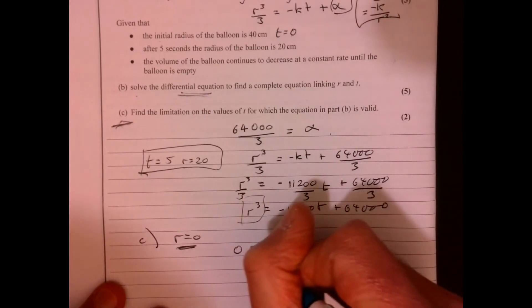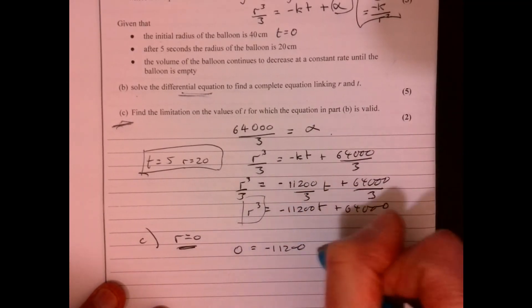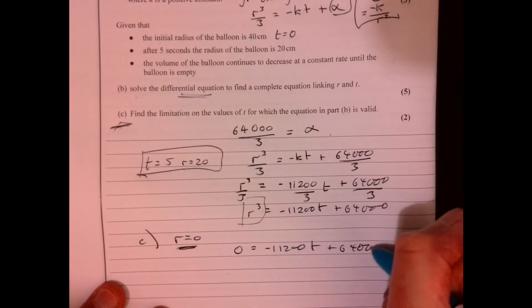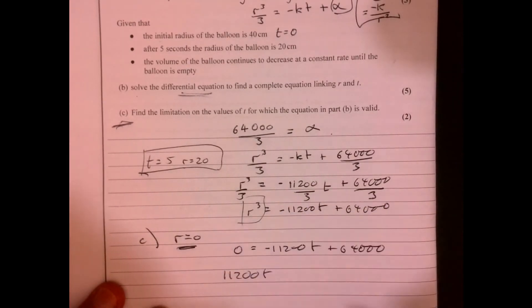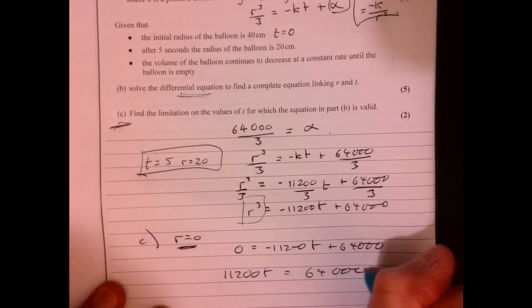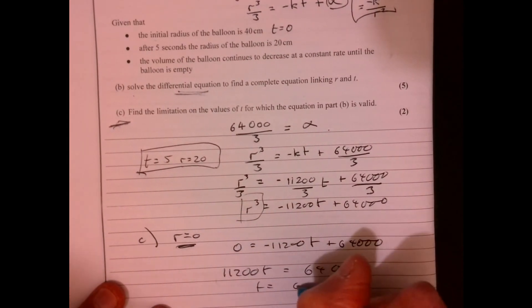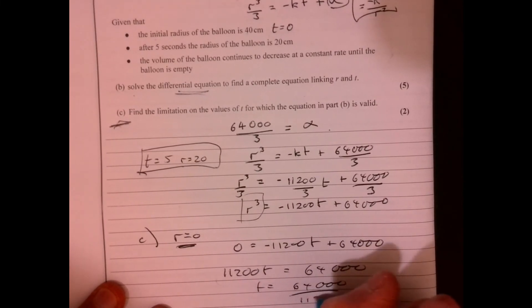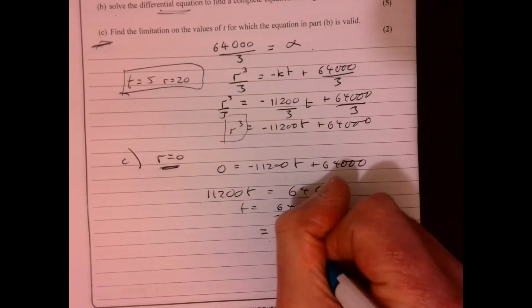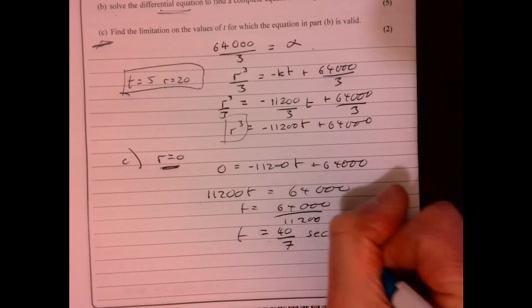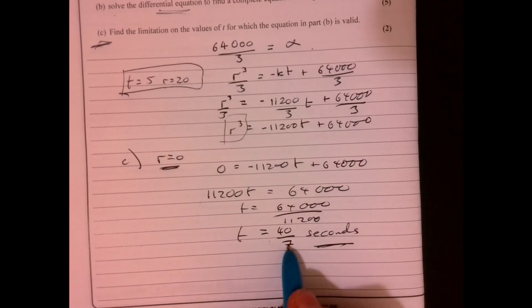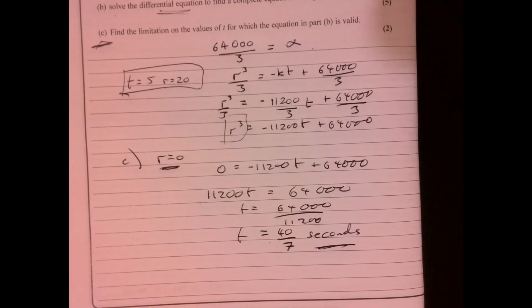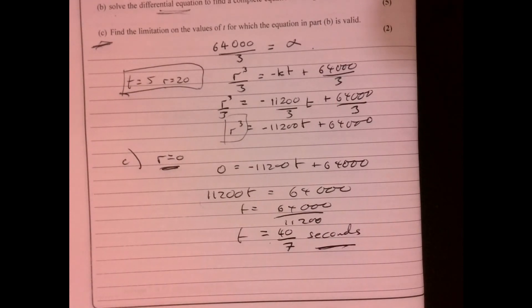So let's just quickly find out - 0 cubed is 0, equals minus 11,200 t, just trying to find the time, plus 64,000. Add that to both sides, divide by 11,200, equals 64,000 divide by this number just here. So divide by 11,200, and we end up getting 40 over 7 seconds. So limitation is that the time needs to be less than this. Because once you go over this figure, then you're going to get negative answers, aren't you? So then it's not going to make sense.